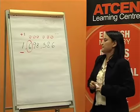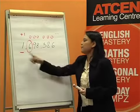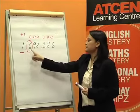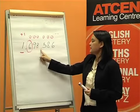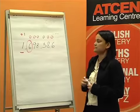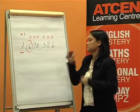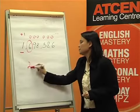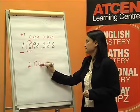Therefore, the number 1,698,586 is rounded to 2 million.